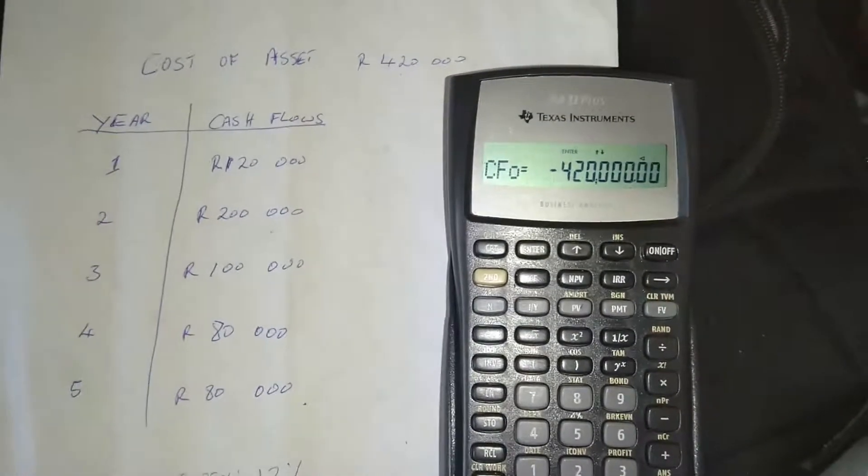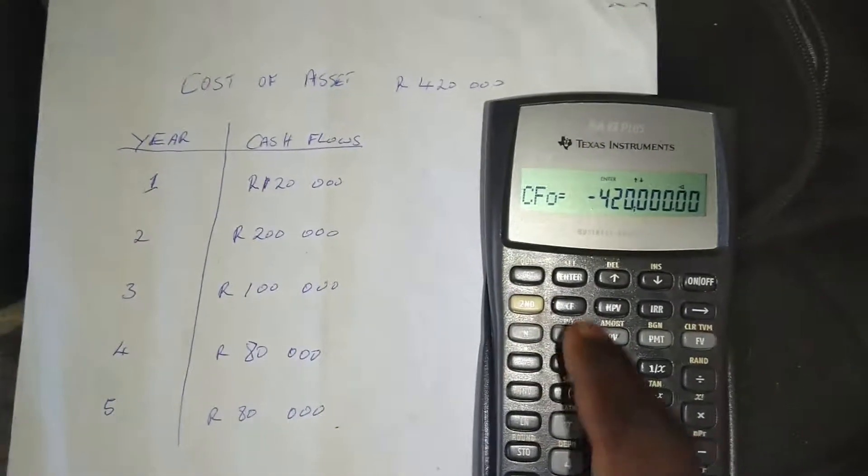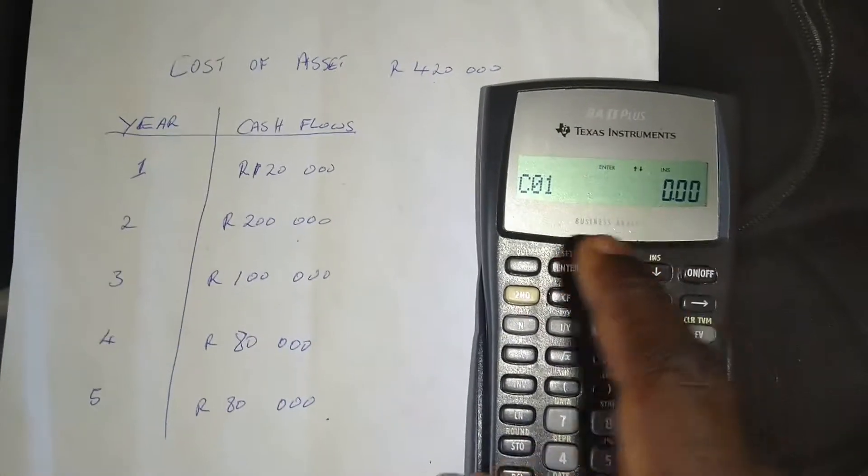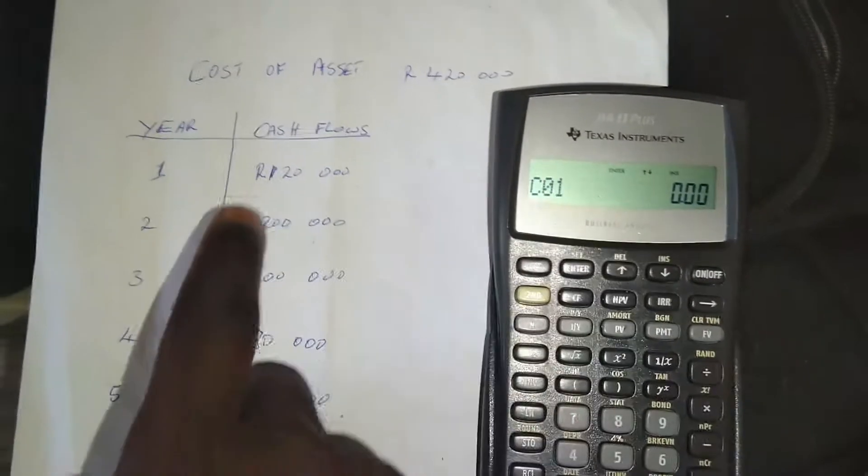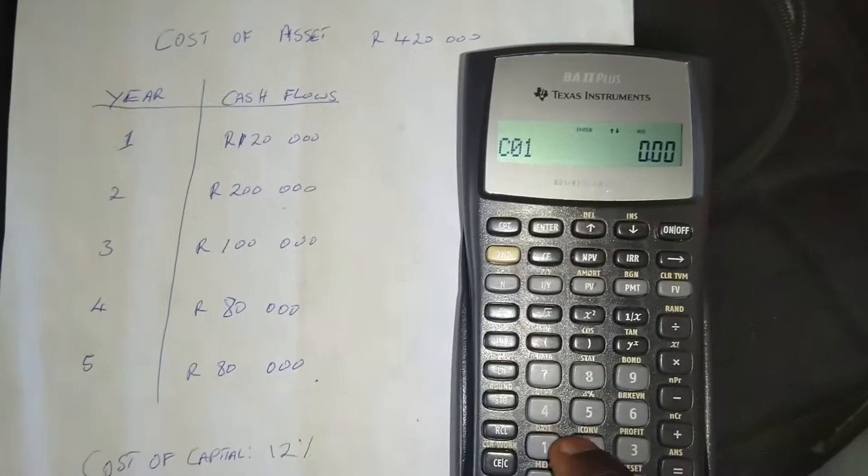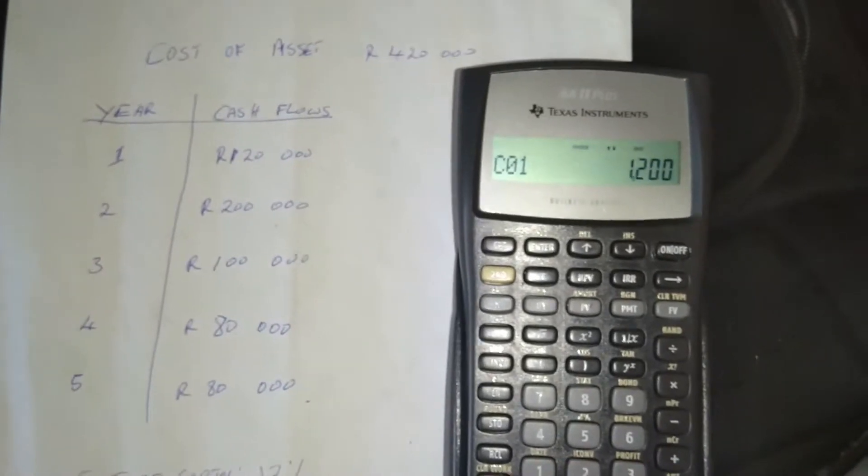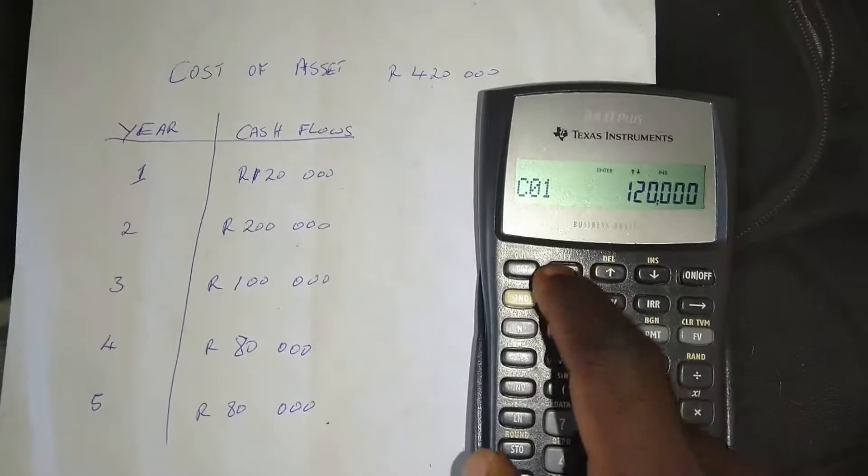And then once you've done that, we go on to our first cash flow. So we move on, we press the down arrow. So you press the down arrow. Now we are at cash flow at year one or period one. It's 120,000 rand. So we press 120,000. And then we press enter.